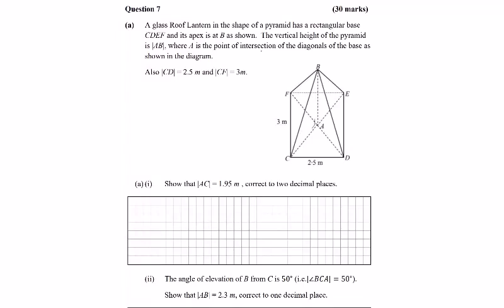We have a 3D trick question here. We have this roof lantern in the shape of a pyramid with triangular sides and a rectangular base of 2.5 and 3 tall. The first part asks us to find AC, which is half of this diagonal, so let's use Pythagoras to do that.